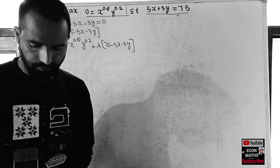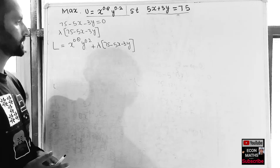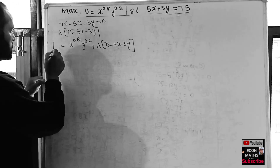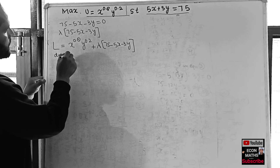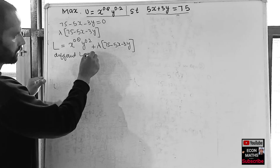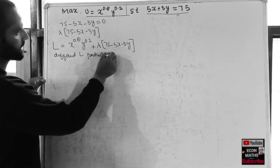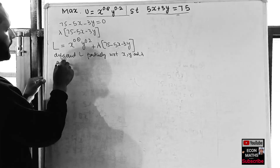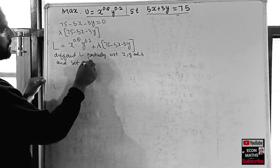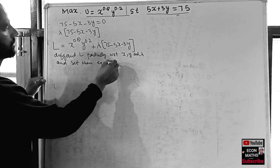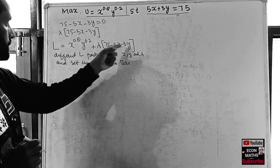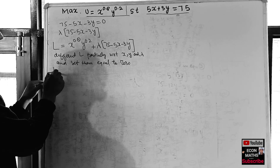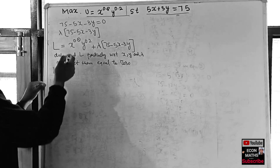To get the values of x, y, and lambda, we will differentiate this Lagrangian function partially with respect to x, y, and lambda respectively, and set each equal to zero.